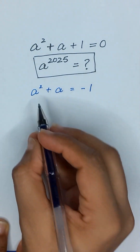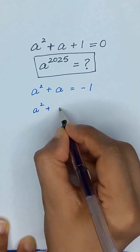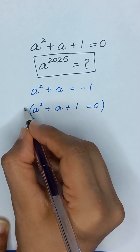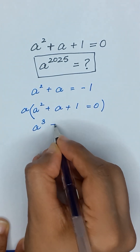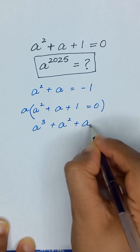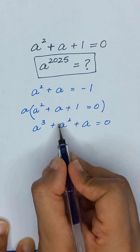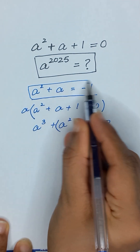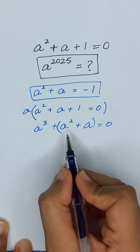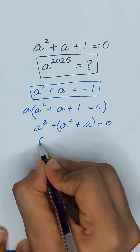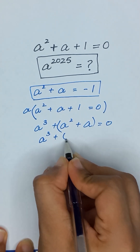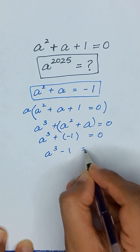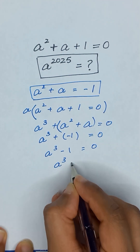We rewrite the given equation A squared plus A plus 1 equals 0 and multiply it by A. This gives us A cubed plus A squared plus A equals 0. Since A squared plus A equals negative 1, we substitute to get A cubed plus negative 1 equals 0, so A cubed minus 1 equals 0. Therefore, A cubed is equal to 1.